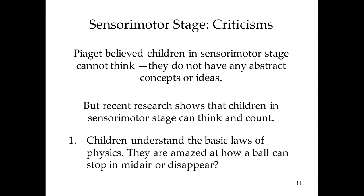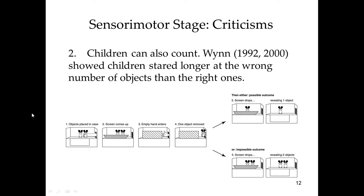Here's an example showing infants can count. Researchers showed two mouse dolls on a stage, then raised a screen and removed one object. The possible outcome: one mouse remains when the screen drops. The impossible outcome: two mice remain. Babies shown the impossible outcome stare significantly longer — demonstrating that stare length measures whether a child grasps or is perplexed by what's happening.